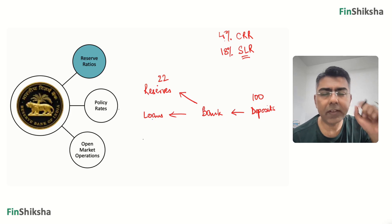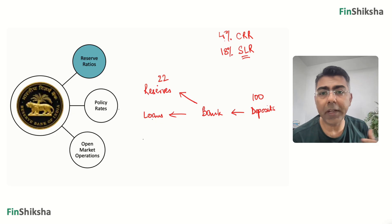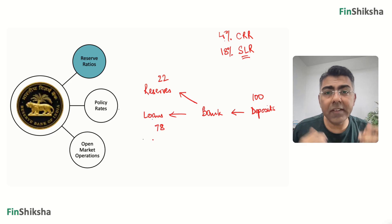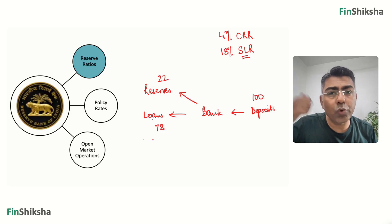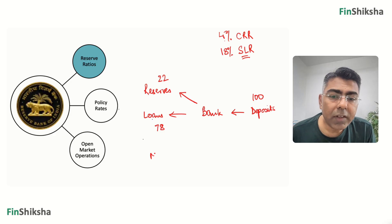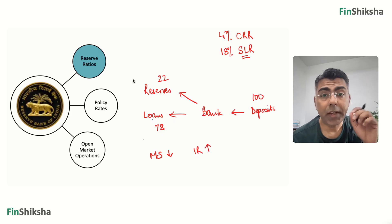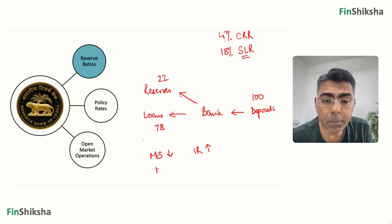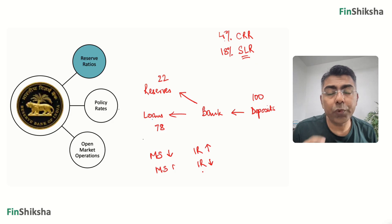In the last policy meet, RBI announced they're going to cut CRR from 4% to 3% in stages by end of this calendar year. Simplistically, with 100 rupees of deposits and 22 rupees as reserves, the remaining 78 can be loaned out. If RBI increases reserve ratios — say from 22 to 25 — you have lesser money to lend, lower money supply, and higher interest rates. If RBI cuts these rates, say from 22 to 20, money supply increases and interest rates effectively come down.